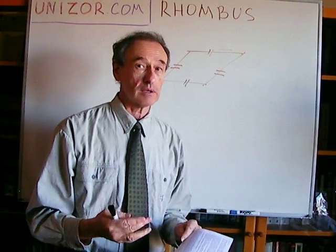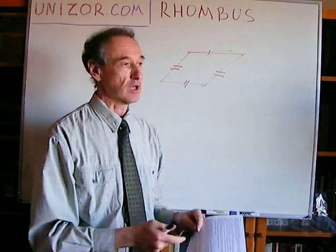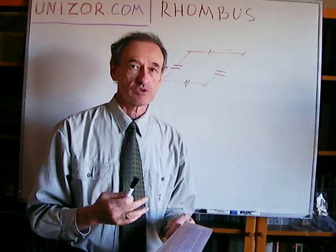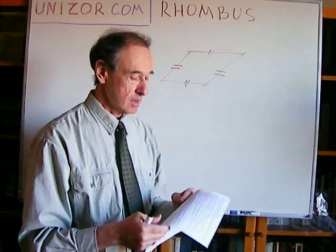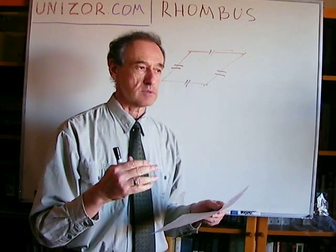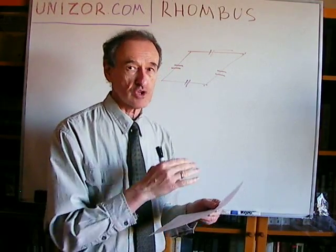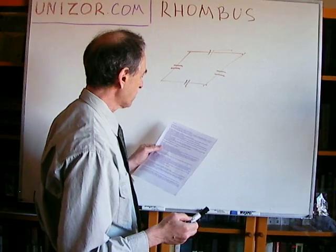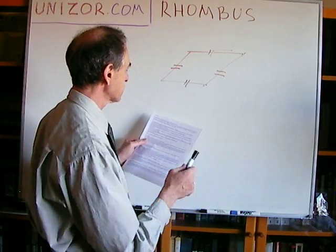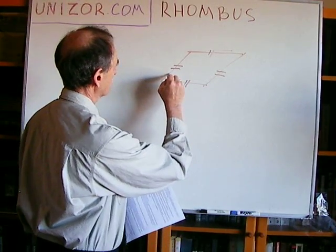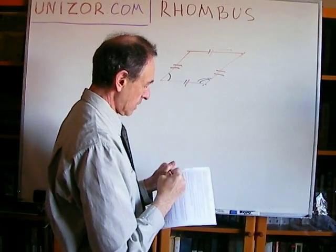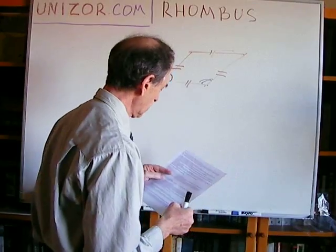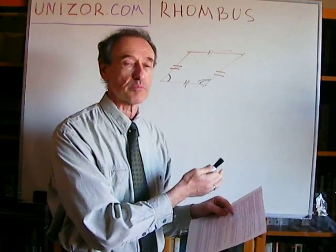Since the rhombus is a parallelogram, and it also has the specific quality that all sides are congruent to each other, all the properties of the parallelogram are supposed to be true for the rhombus as well. I will just mention all these properties because they were discussed and proven in the previous lecture. Two angles of a parallelogram formed by any one side with both neighboring sides are supplemental — and I'm not going to prove it because it's proven for parallelograms.